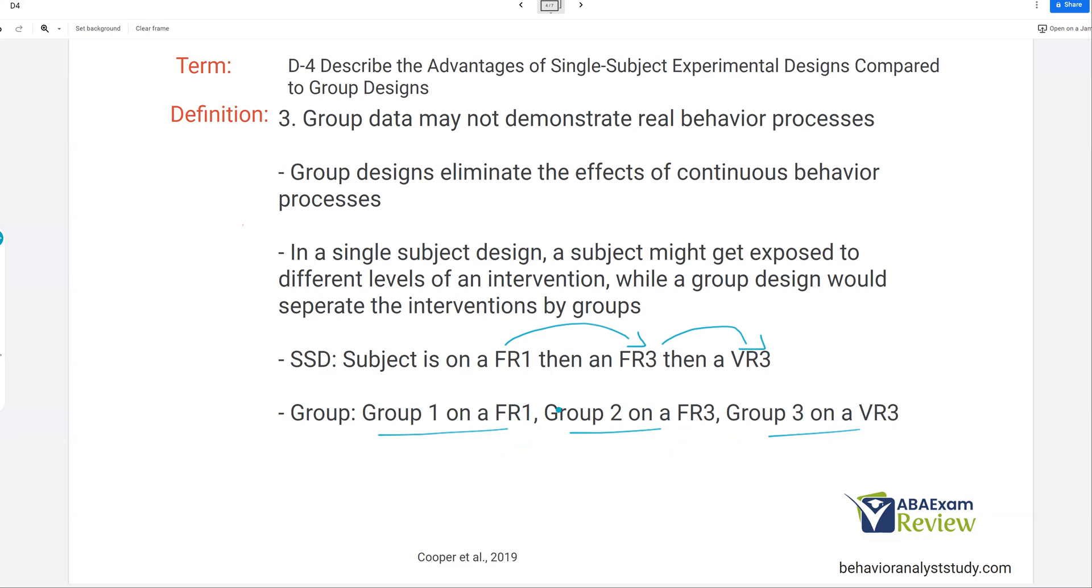In single-subject, though, if we started with an FR1 and then moved to an FR3, well, the time spent on an FR1 is going to affect the behavior on an FR3. So that's what we mean when it may not demonstrate real behavior processes. You might miss some of those effects of prior interventions and prior learning. And these are important when we're examining behavior because it matters. This is where the ideas of things like fading comes from and shaping. If we'd done this in a group and we fade something, and there's ratio strain for three of the 50 participants, that might have been missed in a true group design. So a group design may separate the interventions by groups and miss these behavior-changing effects.